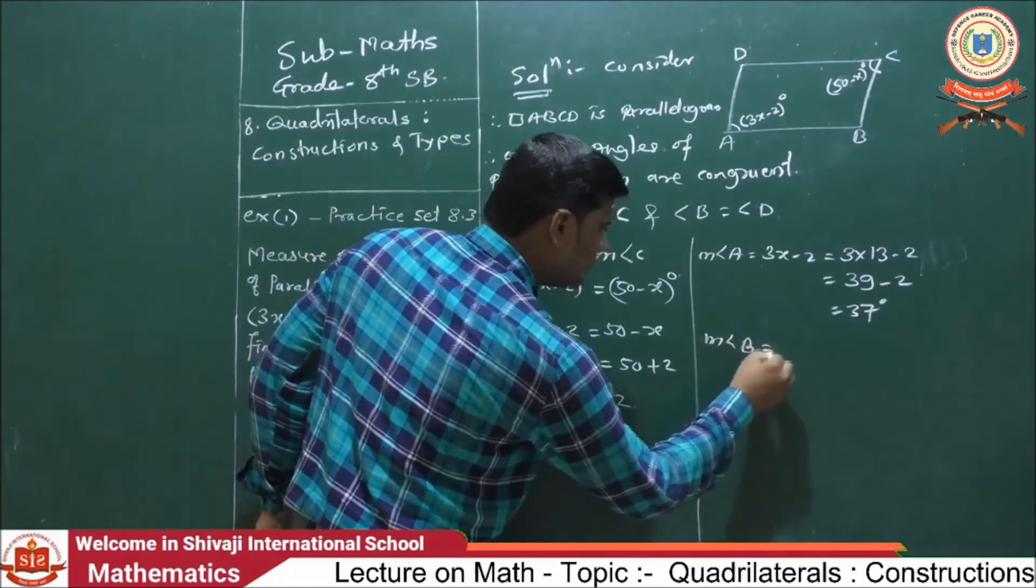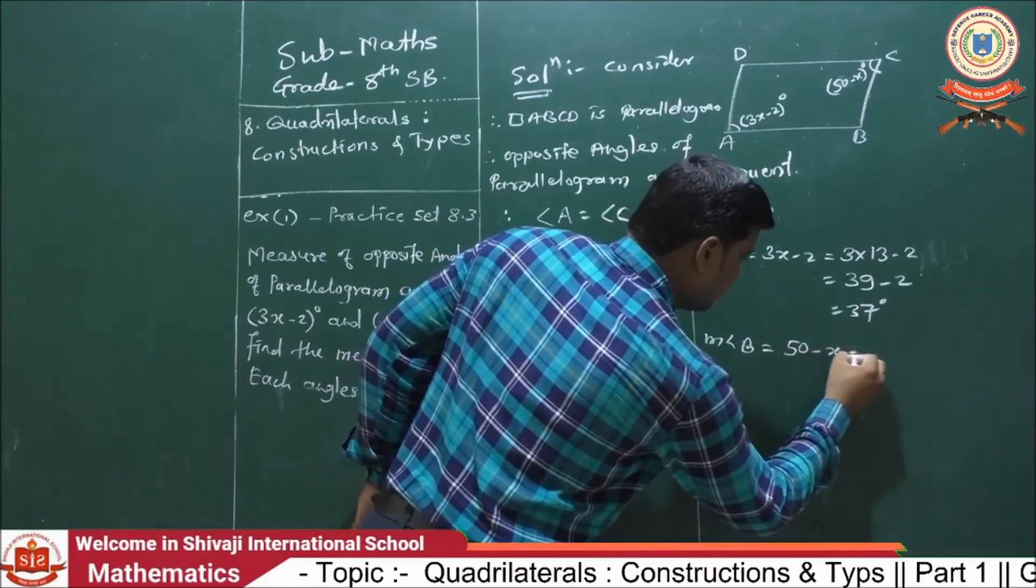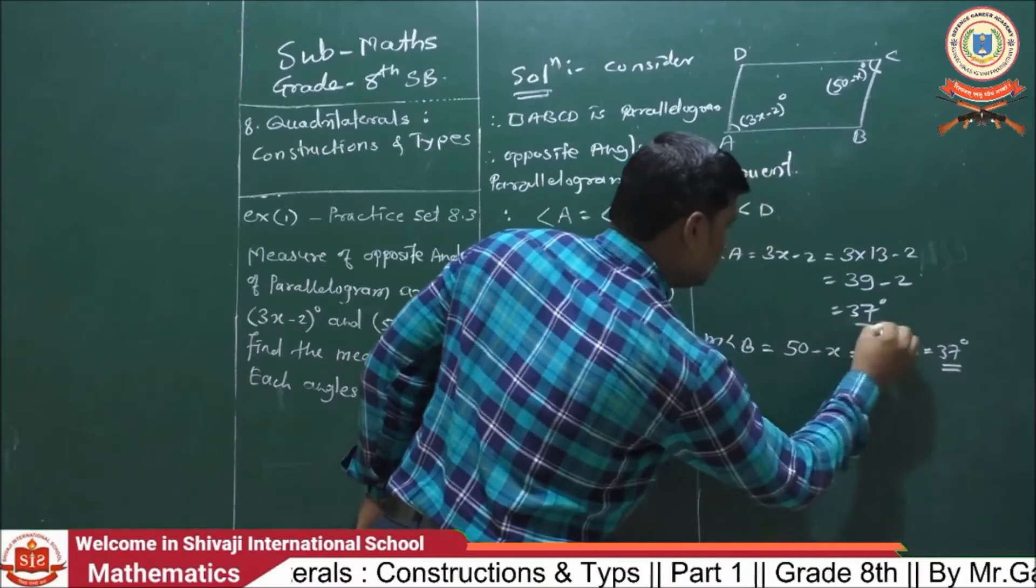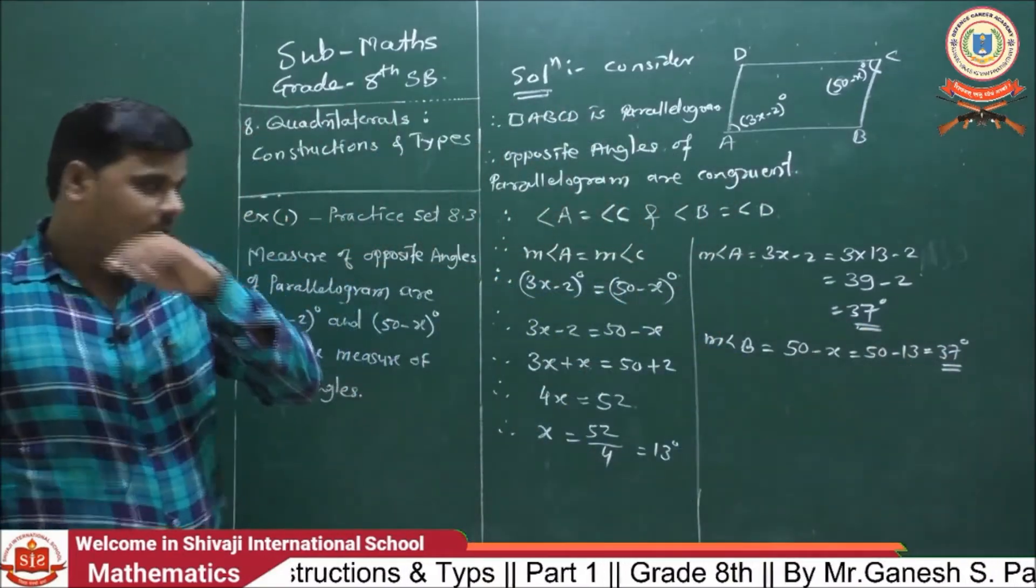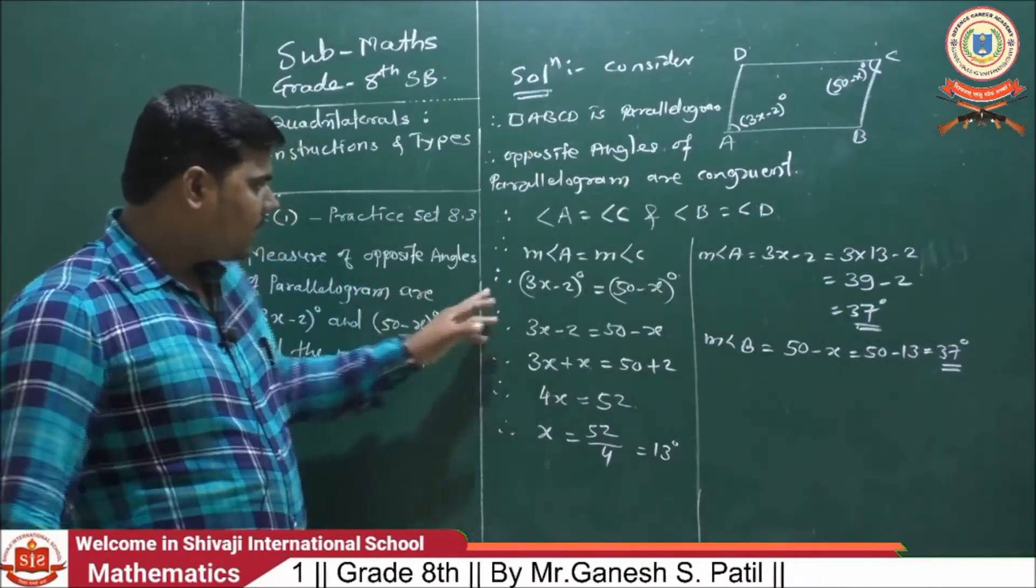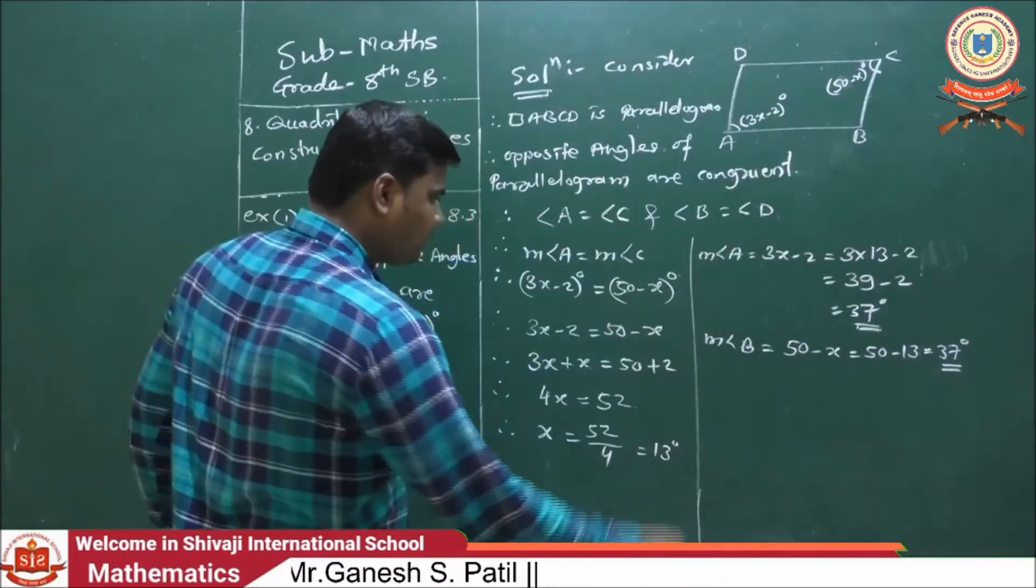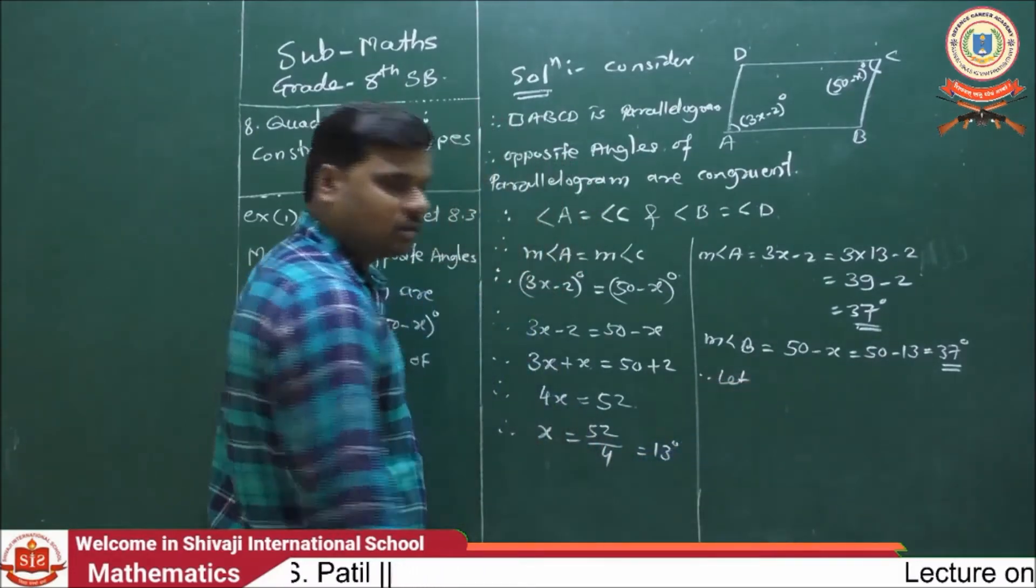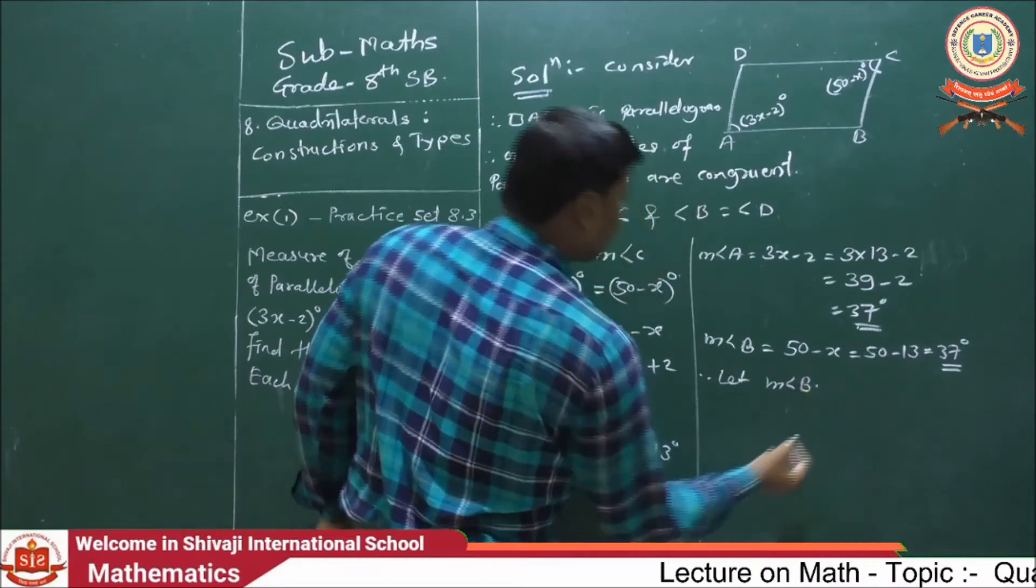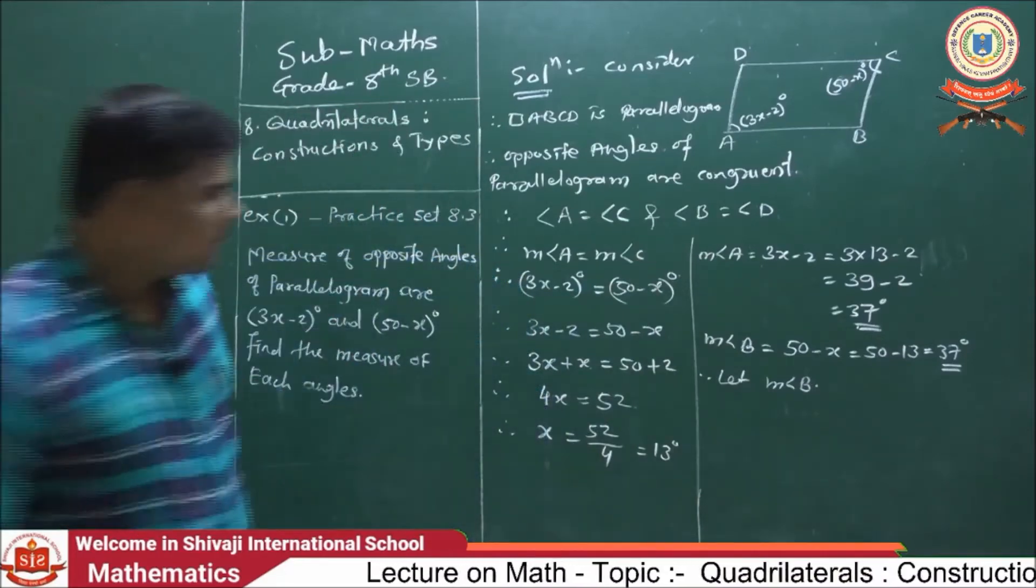Like that, measure of angle B is equals to 50 minus x. Means, 50 minus 13, and it is 37. See, the measure of this angle is equal because the opposite angles of parallelogram are congruent. This is property. Then, find out these 2 angles B and D also. You can directly take here the property.